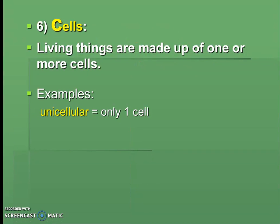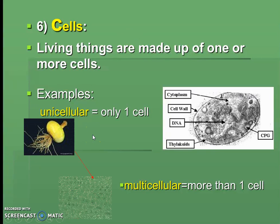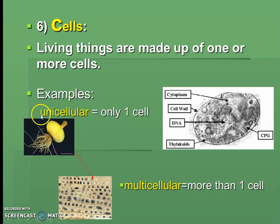C is for Cells. Living things are made up of one or more cells. Having only one cell is called unicellular — like bacteria. Having many cells is multicellular. To remember: unicellular sounds like a unicycle, which has one wheel. Multi means many.